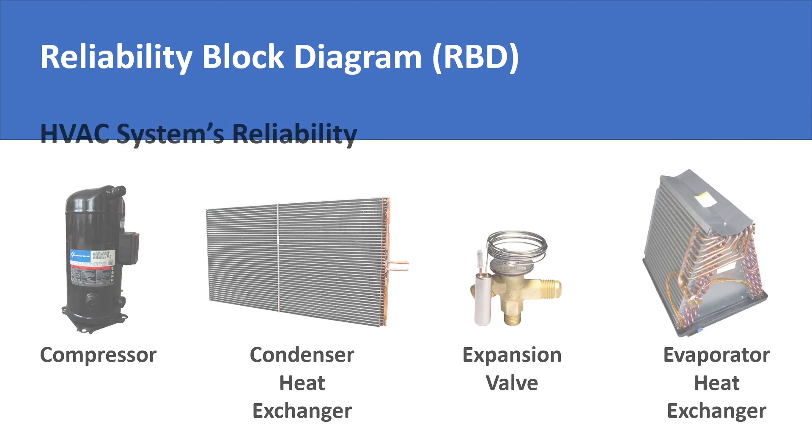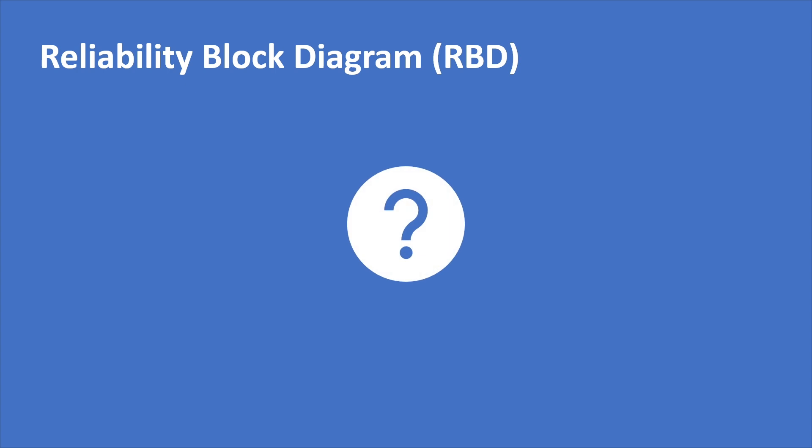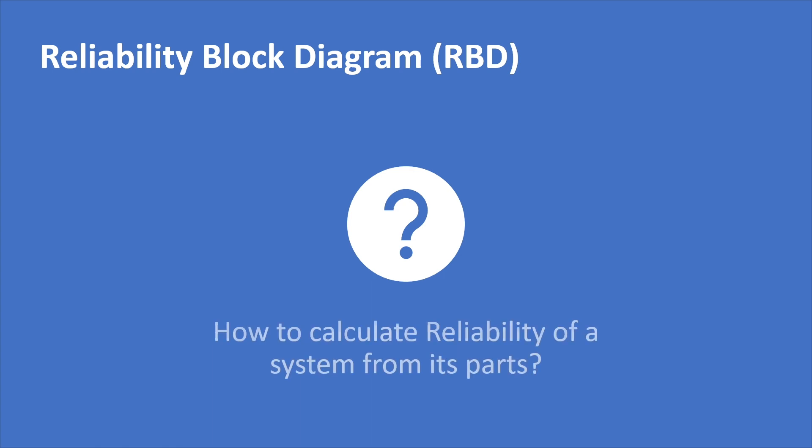The concept of reliability block diagram answers: how does the reliability of components combine with each other? Do you add all the individual reliabilities, subtract them, multiply them, or divide them? The problem statement that a reliability block diagram addresses is how do you calculate the reliability of a whole from its parts.